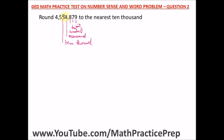We are rounding to the nearest ten thousand, so we look at the digit in the ten-thousands place, which is 5. Then we check the digit immediately to its right. If that digit is equal to 5 or greater than 5, we round up by adding one to the ten-thousands digit. If it is lower than 5, we do not round up.